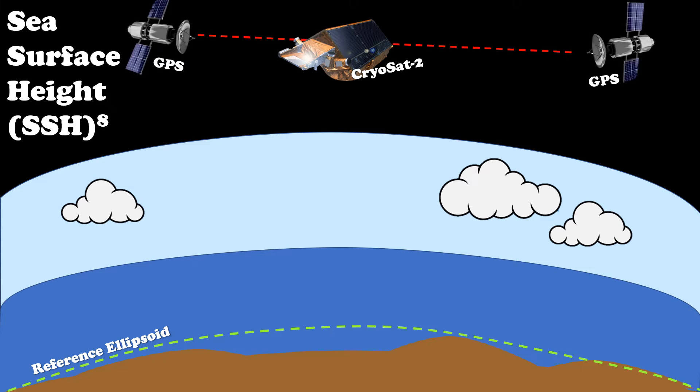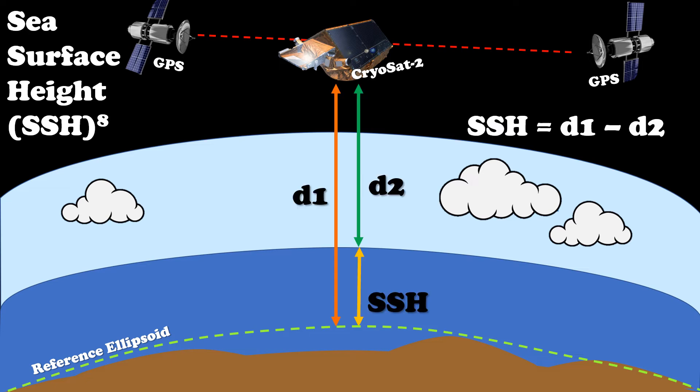The height of the satellite relative to this ellipsoid is calculated from GPS and is known within an error of three centimeters. Given this, the distance from the satellite to the ellipsoid minus the distance from the satellite to the ocean is equal to the sea surface height.